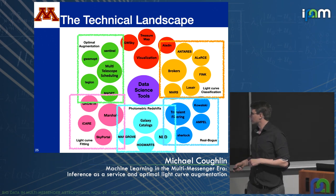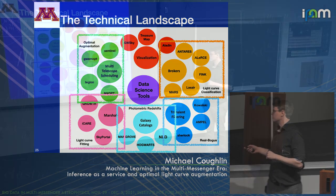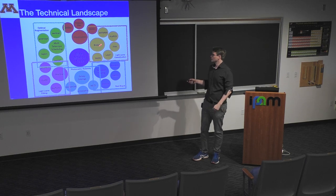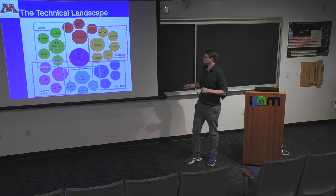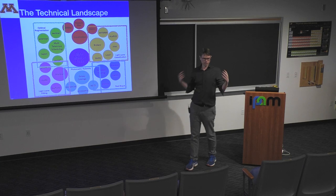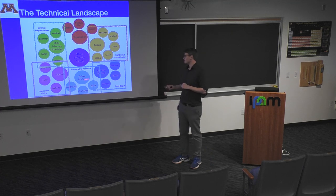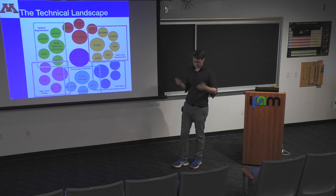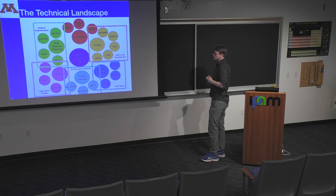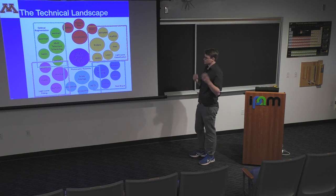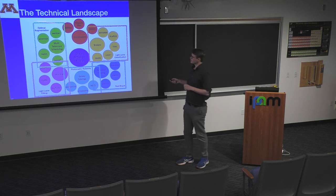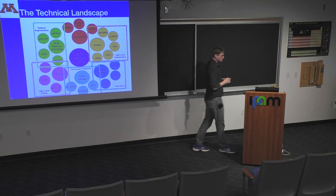Machine learning plays a huge role in all of these areas. Light curve classification work is going on within the brokers. Within transient filtering, we have real-bogus classifiers to identify real transients versus CCD artifacts. Within galaxy catalogs, we have photometric redshifts — using color instead of spectra to identify redshift. Marshals use light curve fitting and many use machine learning to do so. Within the scheduling framework, oracles are being built to do optimal augmentation of data — taking your survey and follow-up facilities and adding to them.